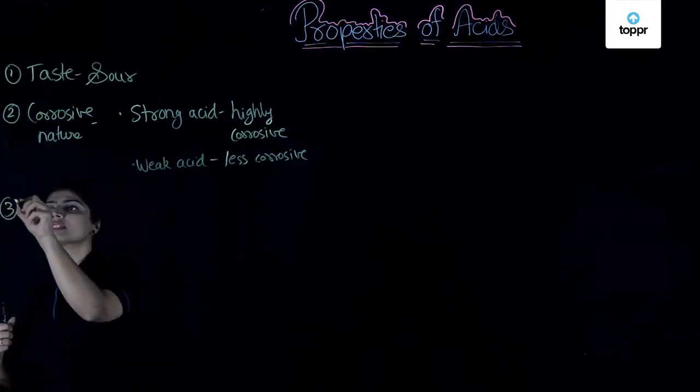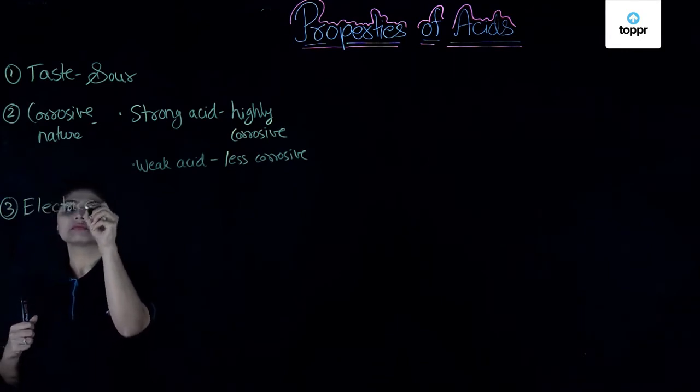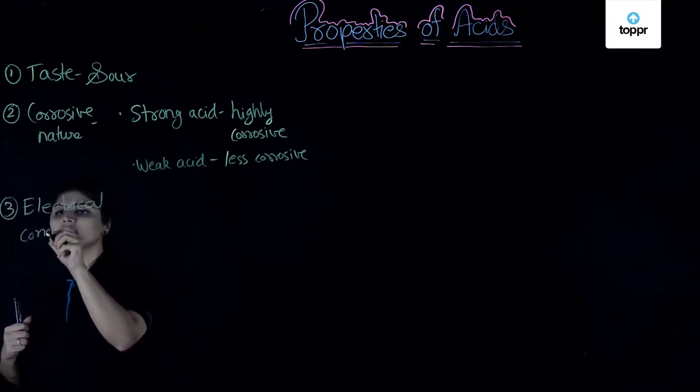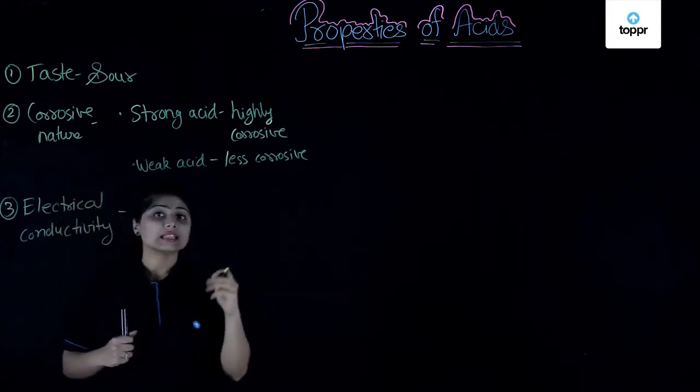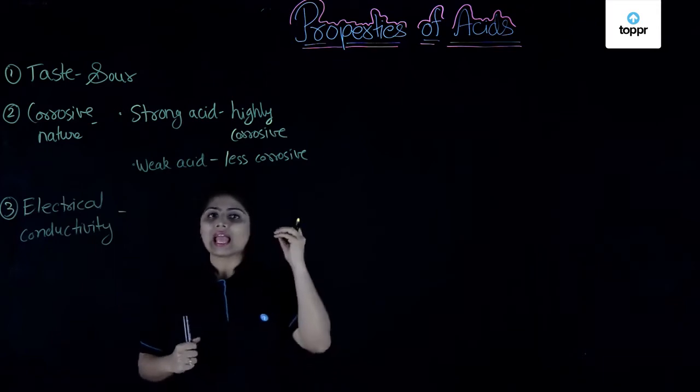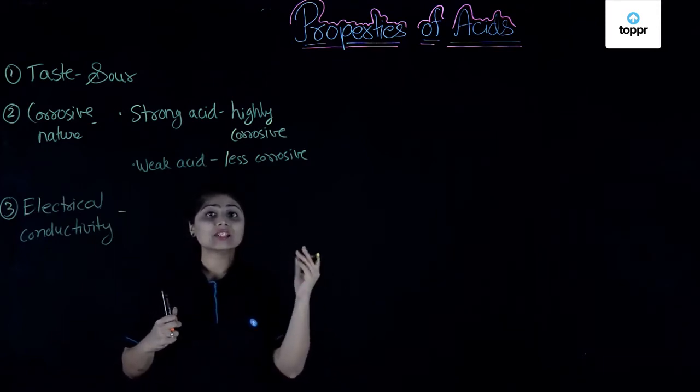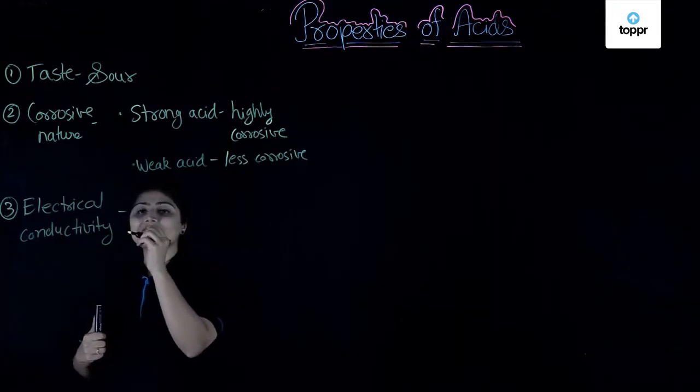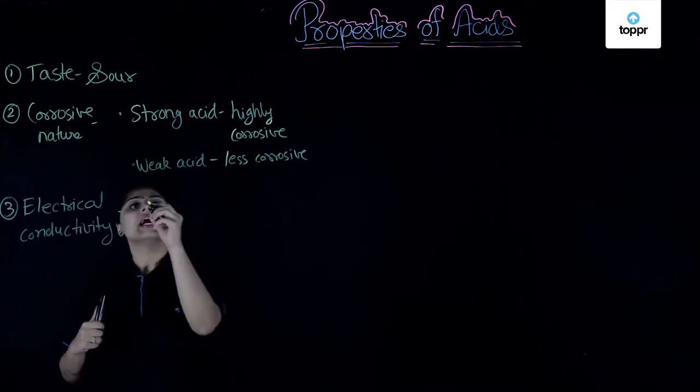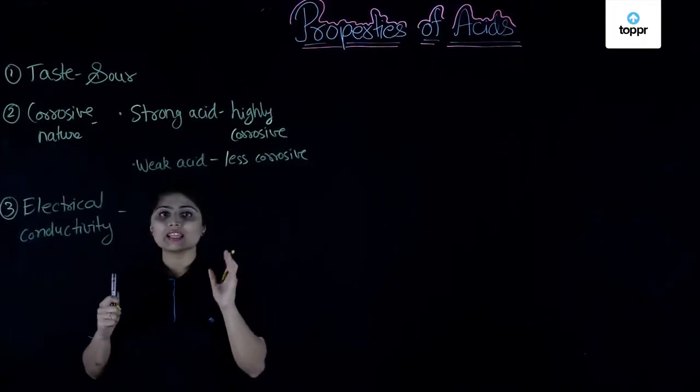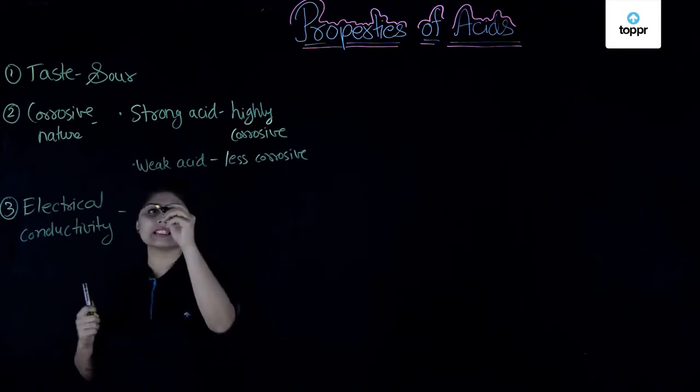The next thing that we talk about is electrical conductivity. Do you think acids conduct electricity? Yes, they do because they can form ions and acid always forms H plus ions and the rest part of the acid always forms a negative ion. So, electricity can pass through a solution of acid. How much of electricity can be passed through a substance or an acid? It depends upon how strong or weak the acid is.